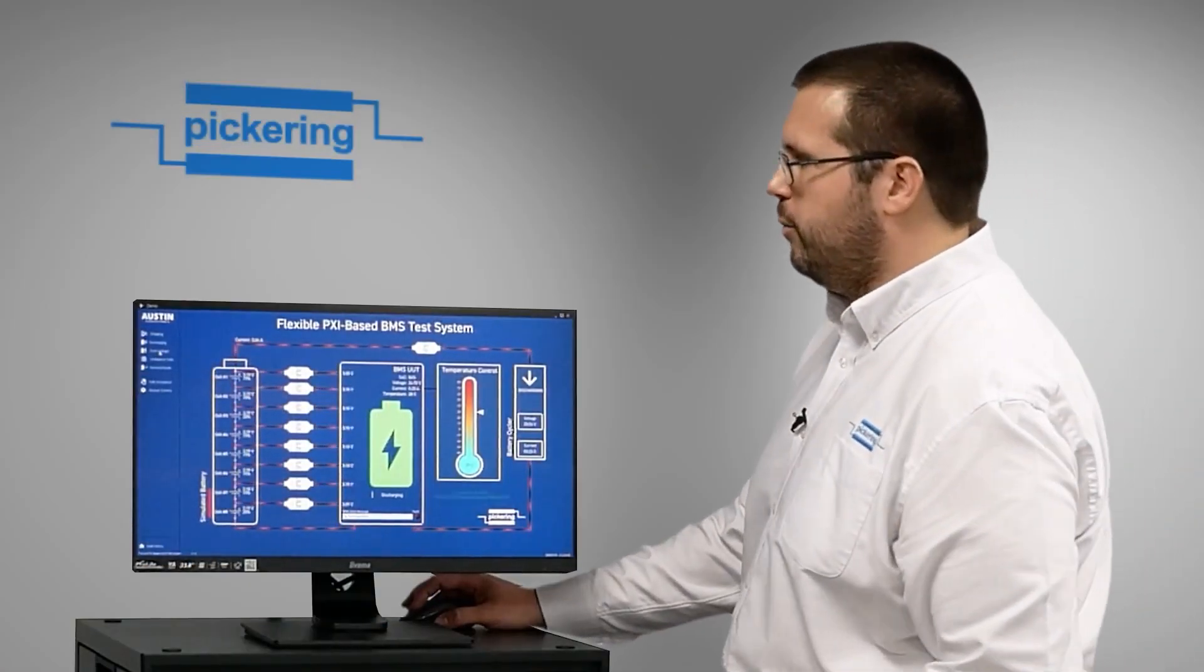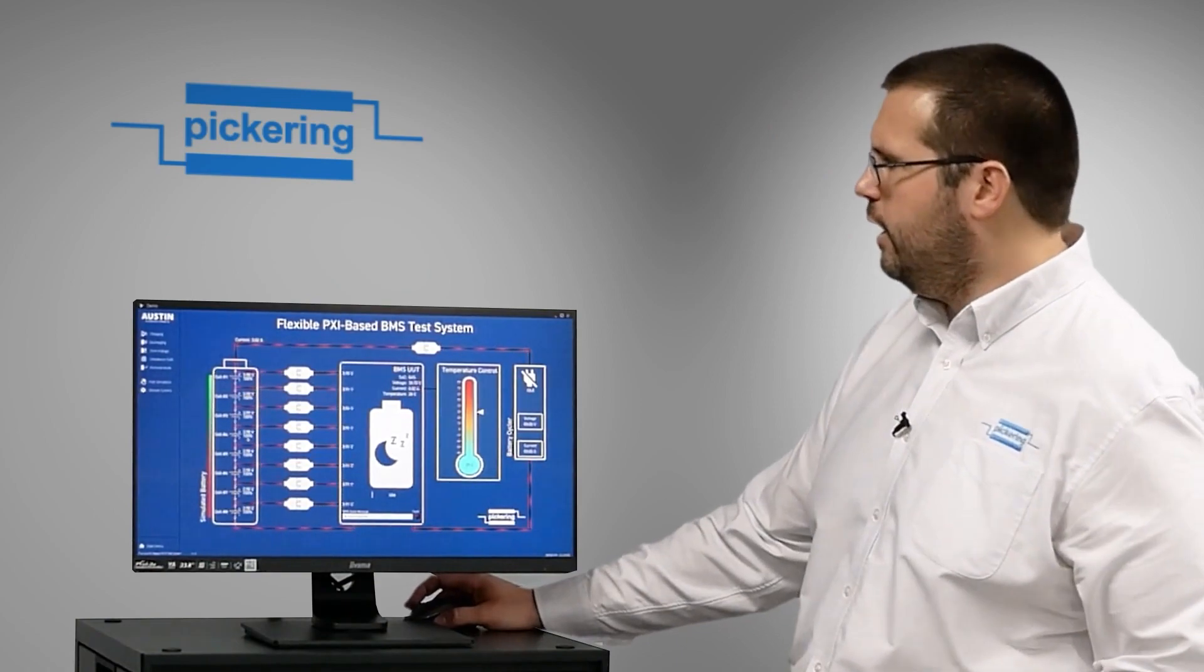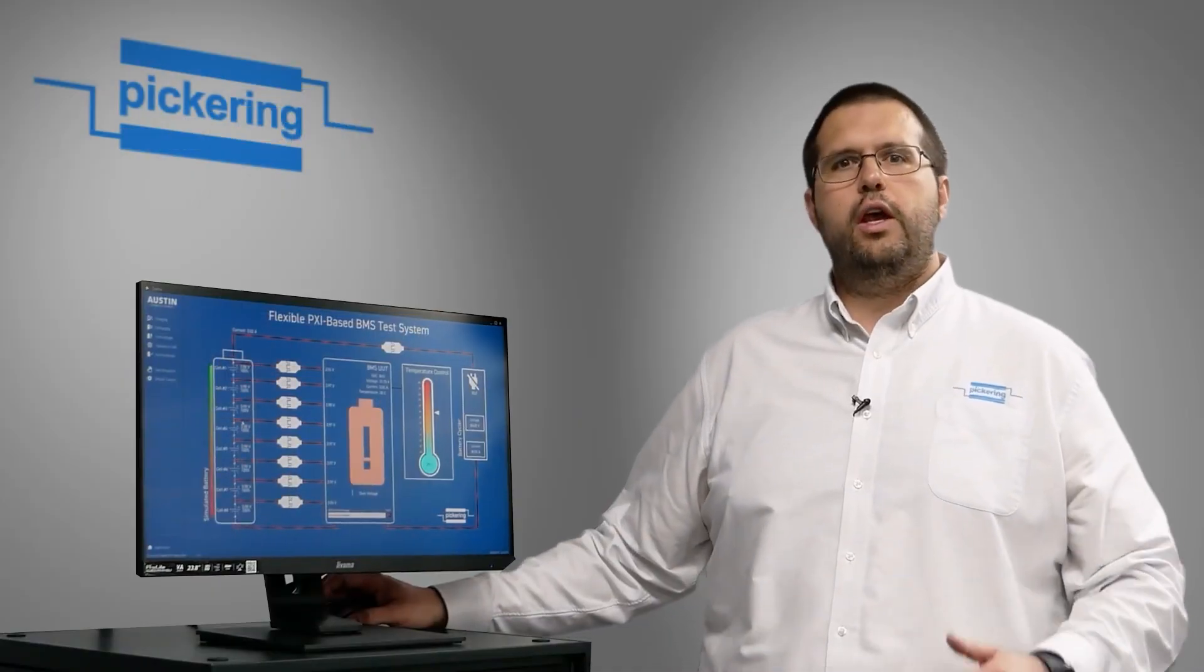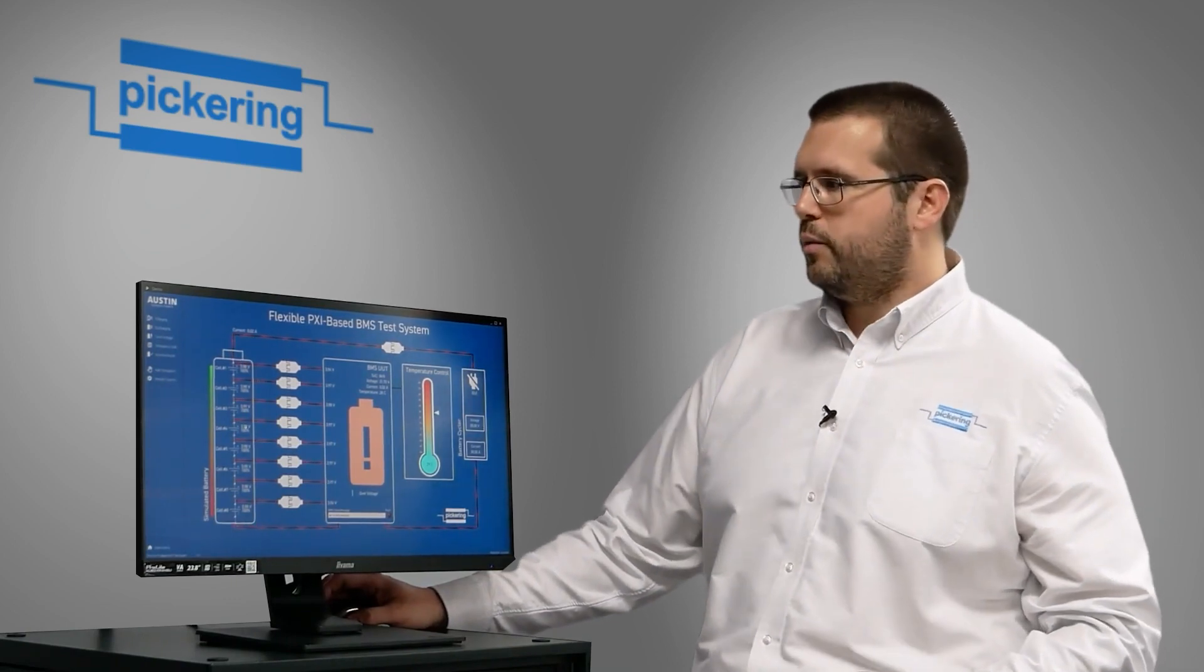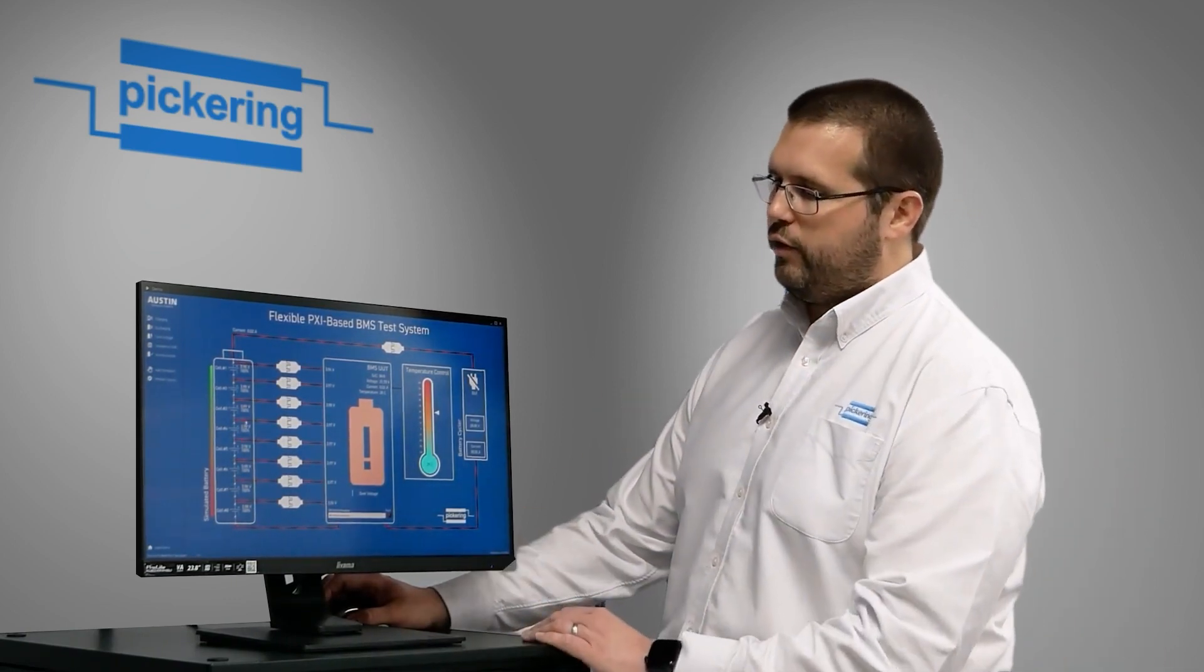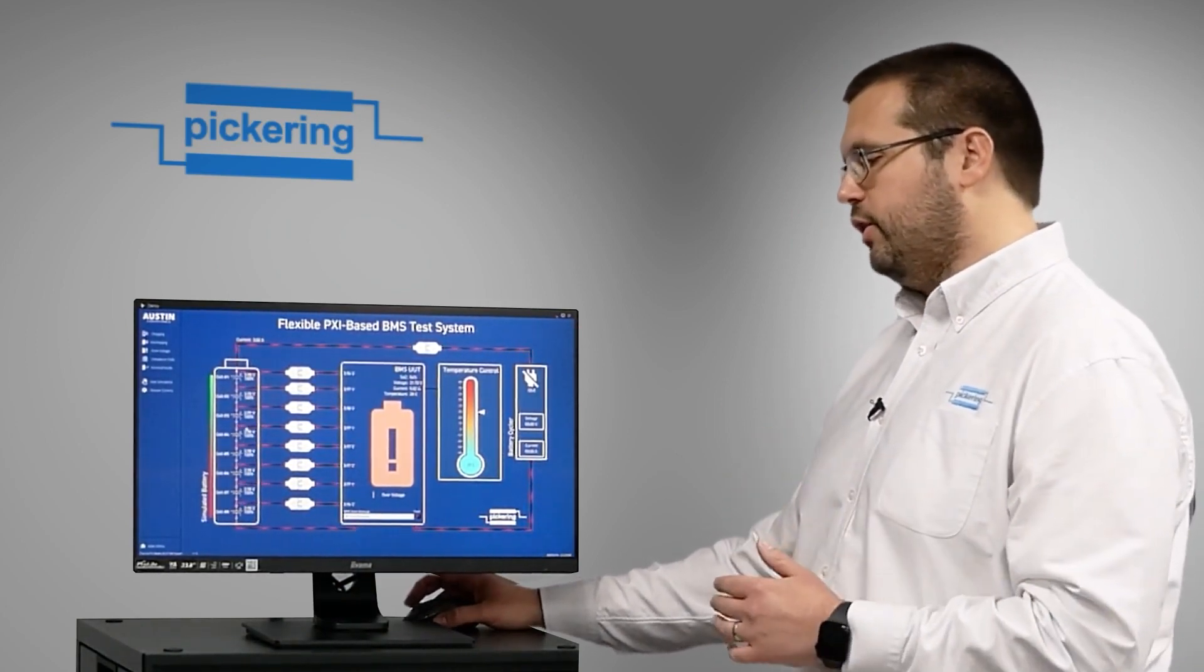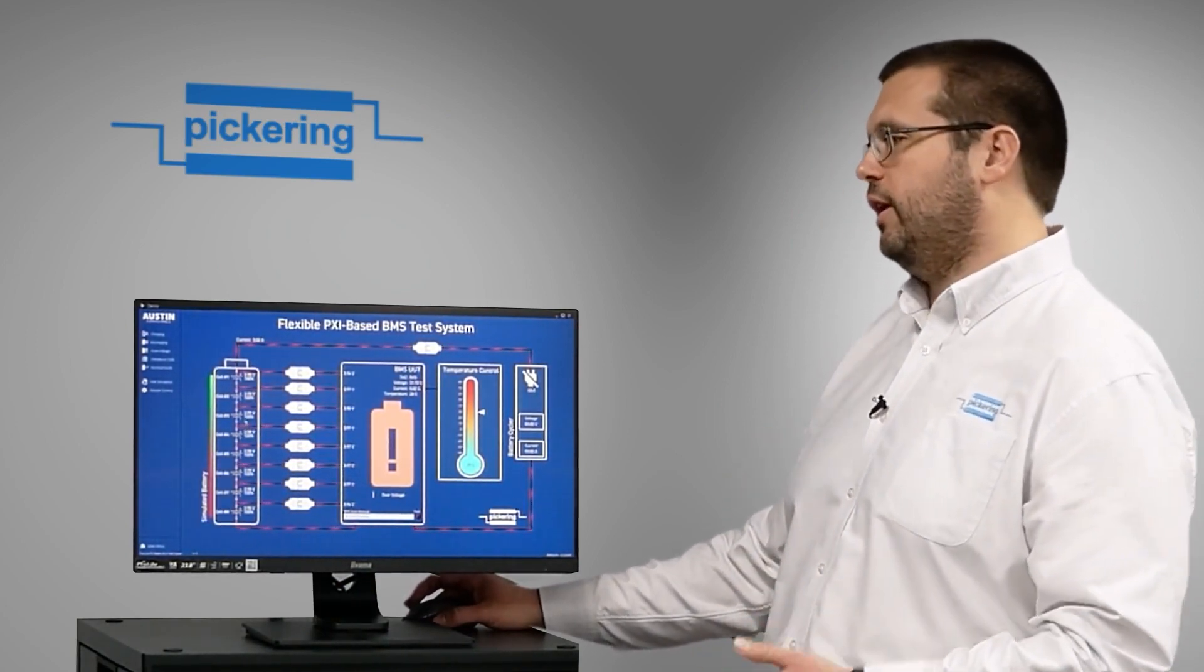Also we can simulate over voltage. On here all the cells are up to 3.98, 3.99 volts, which is obviously over voltage for a cell. Now the BMS has recognized this and it's returning a condition of over voltage, again showing that that functionality of this BMS is functioning as expected.